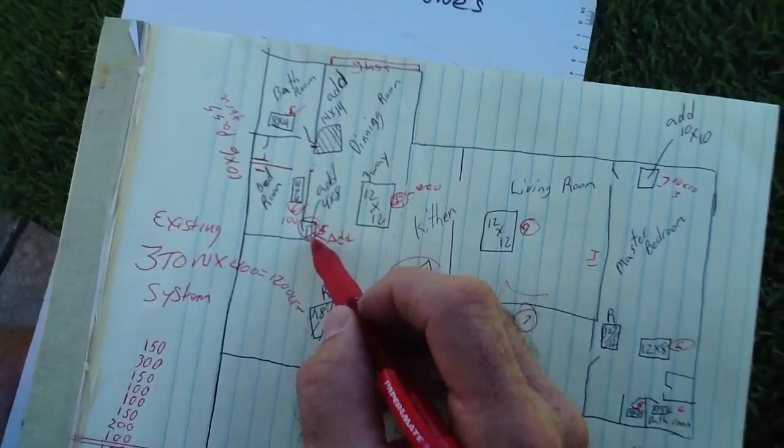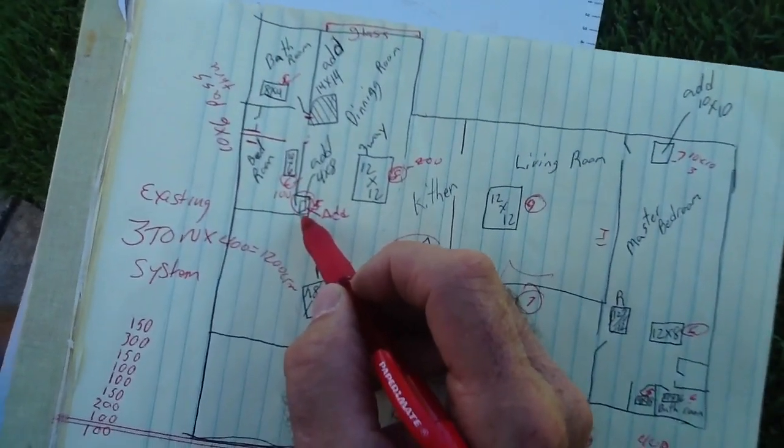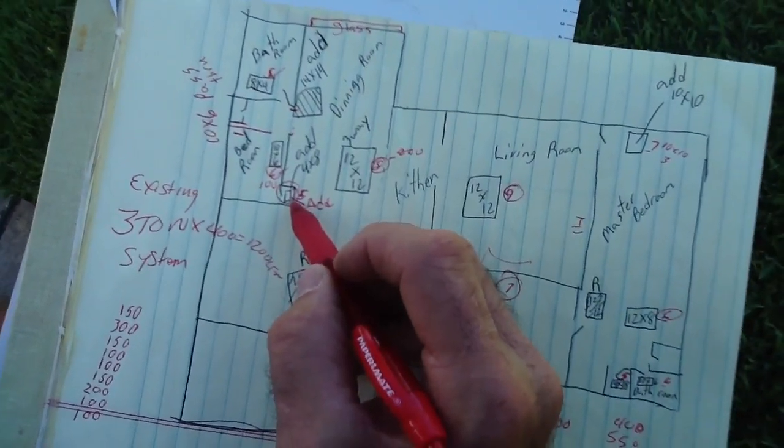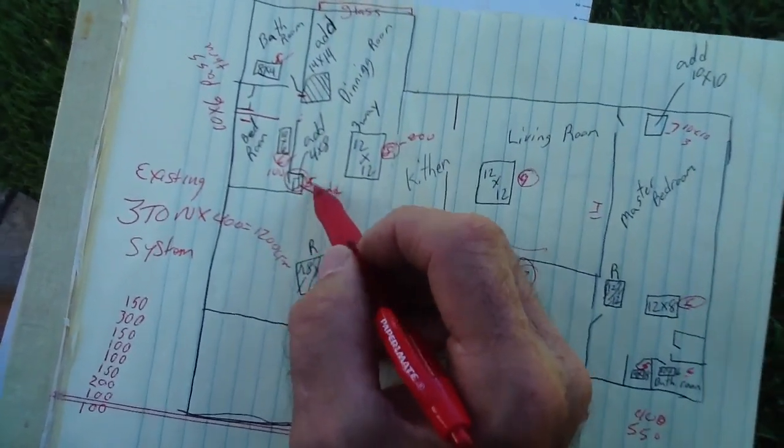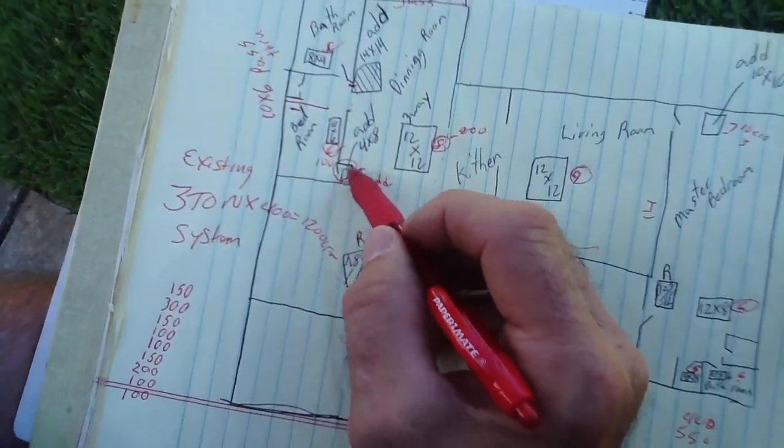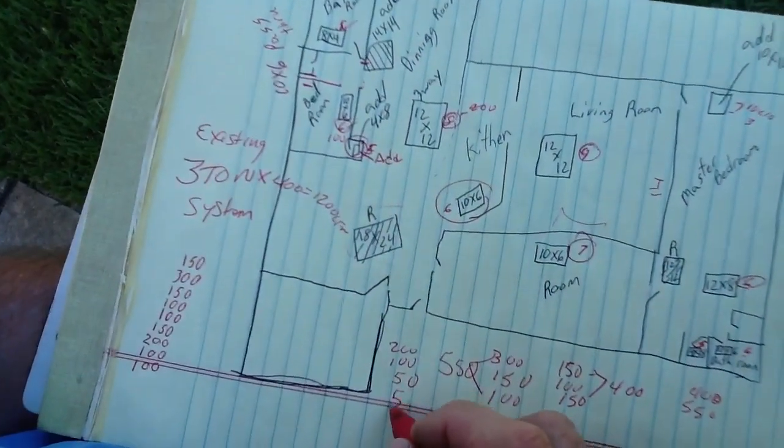This is a walk-in closet. By code, if you have a walk-in closet you should always add at least a little bit of airflow to move the air so you don't have what we call a stratified zone. It keeps down odors and keeps the mold and mildew off the customer's clothes, so that's another 50 CFMs.